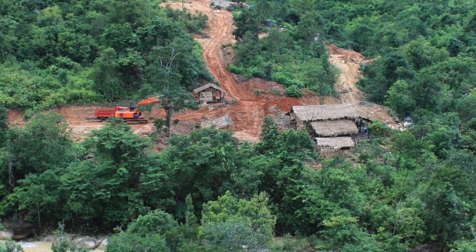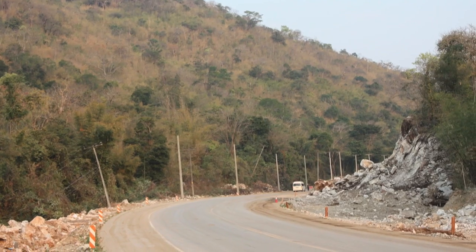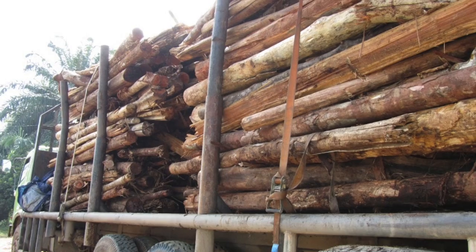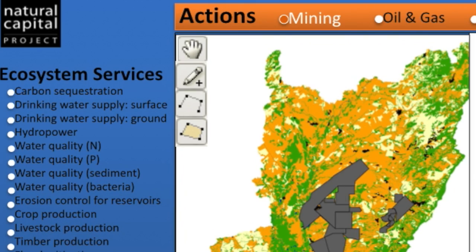For example, the tool allows users to see if a mine is proposed for a particular site, or a road, or an oil and gas facility, how loss of natural ecosystems would affect both biodiversity and ecosystem services, and then how offsets can be selected that would protect biodiversity and also secure ecosystem service benefits for the same people who might be affected by the development in the first place.